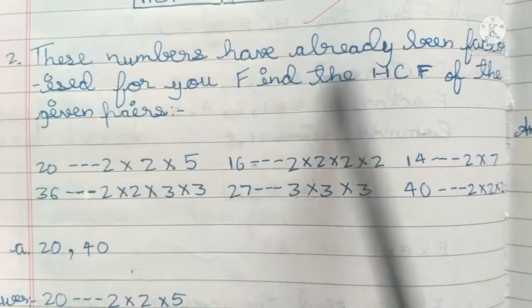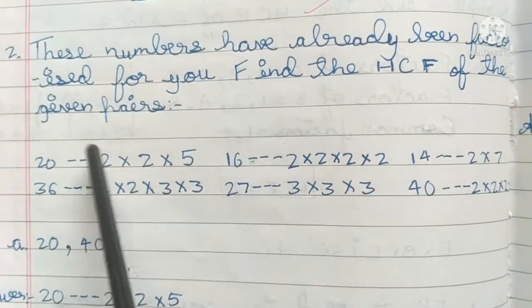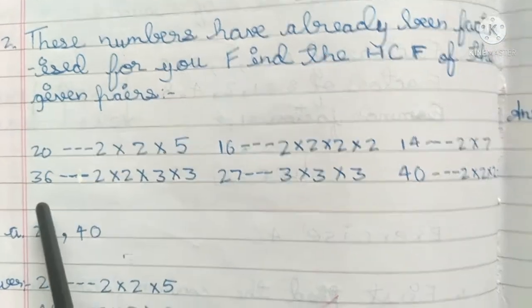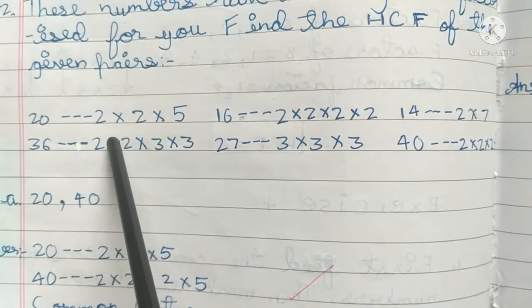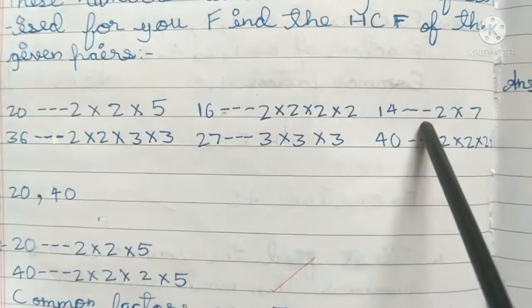Second problem: these numbers have already been factorized for you. Find the HCF of the given pairs. 20 is 2×2×5; 16 is 2×2×2; 14 is 2×7;